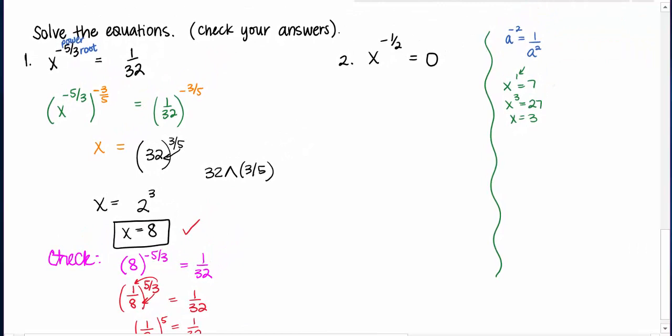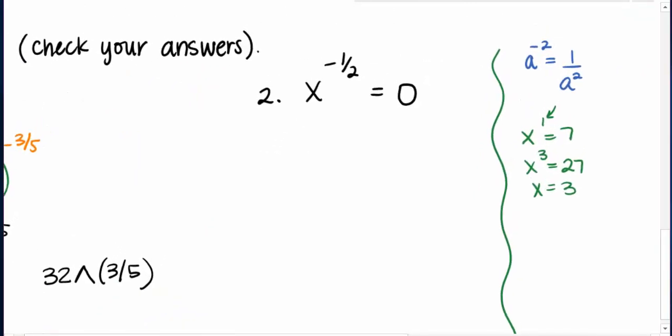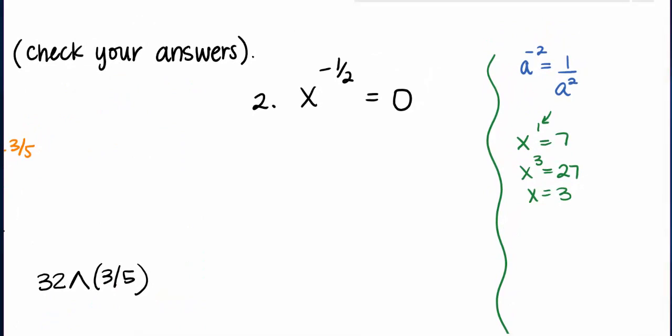So now my second equation that I'm going to solve is x to the negative 1 half equals 0. And this is really important because this comes up often and we think that 0 to any exponent is 0. And that is not necessarily the case especially when that exponent is 0 or negative.